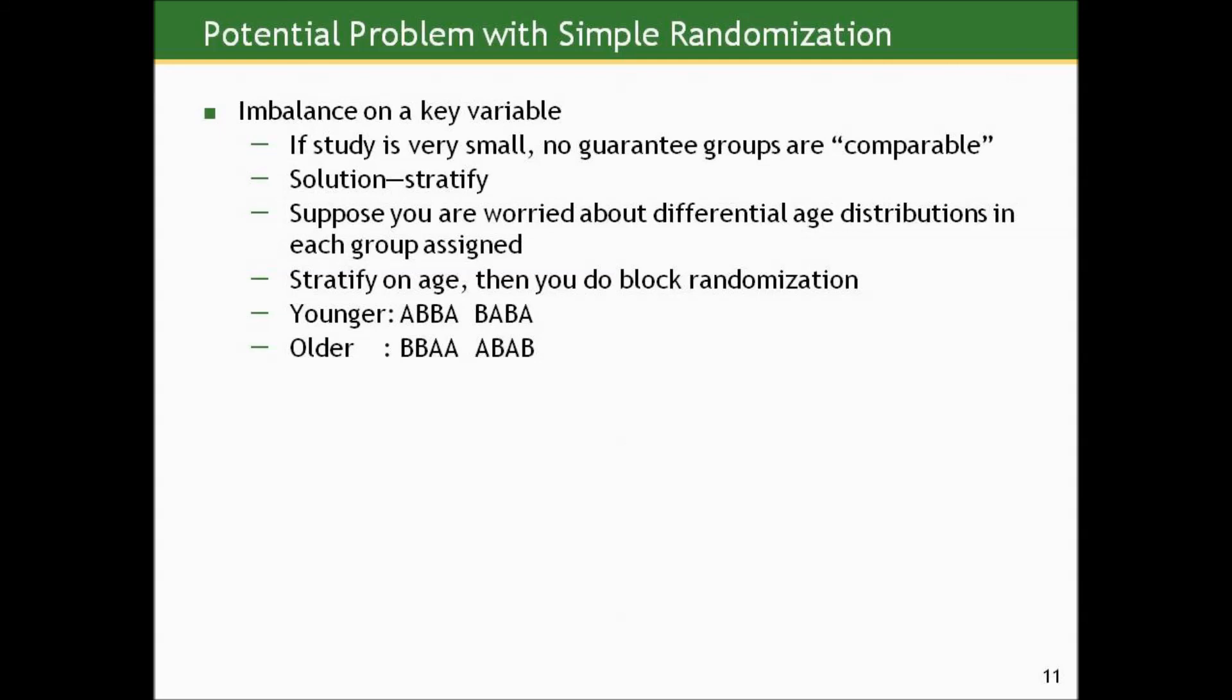One strategy would be to stratify on this key variable, then do block randomization within each strata. So if we could cut people off at younger or older, say, given the median age of the group, and then randomize only the younger to A or B using the blocked approach, and then the older, what we get is not only an equal distribution roughly of persons in groups A and B, but within A and B, we'd have a similar age distribution.